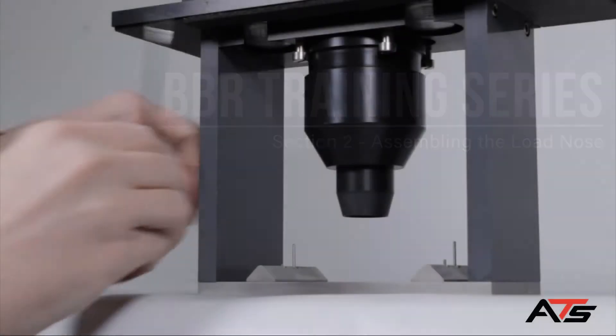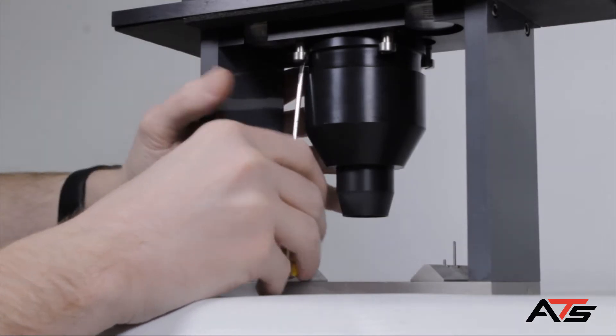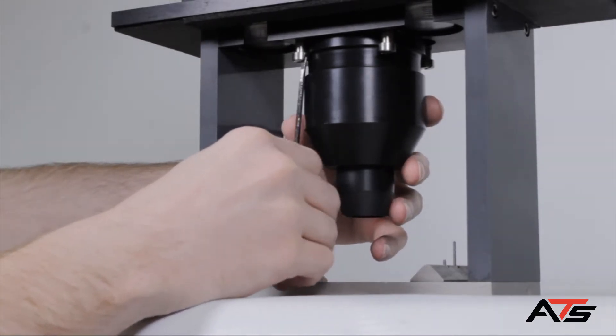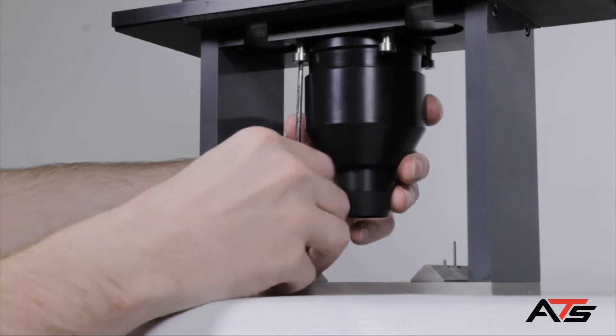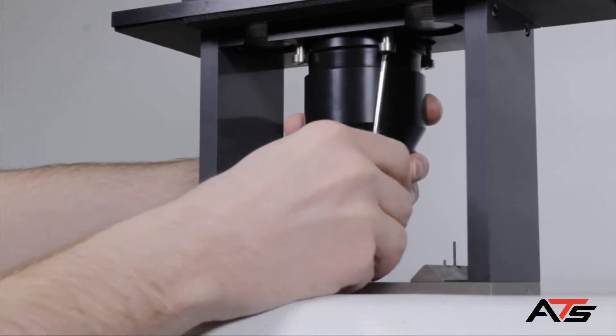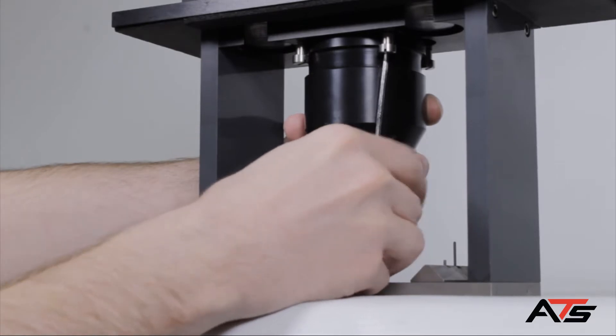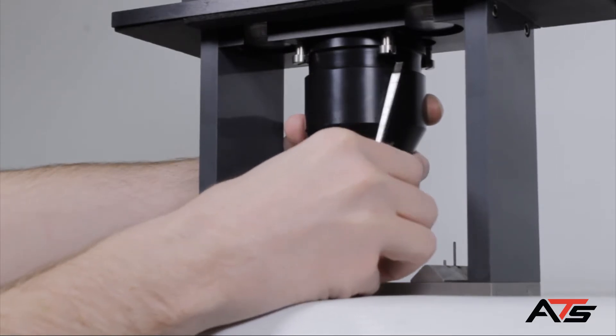There are four screws securing the shroud to the load frame. Remove the front two screws and loosen the back two screws to remove the shroud from the frame.